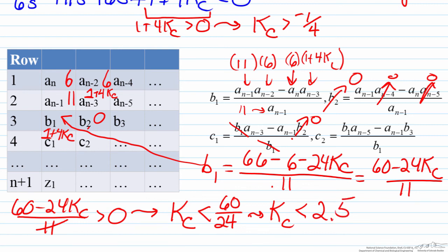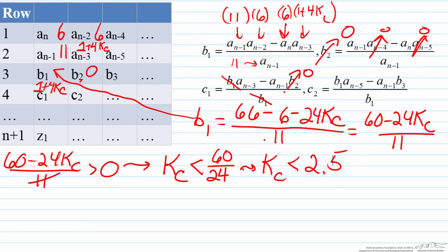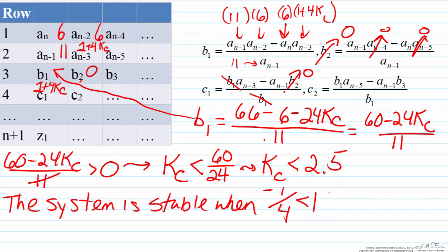We know that in order to satisfy both the original equation and c₁, KC has to be greater than negative one-quarter. But we also know that to satisfy b₁ being positive, KC must be less than 2.5. Therefore the system is stable when KC is between negative one-fourth and 2.5.